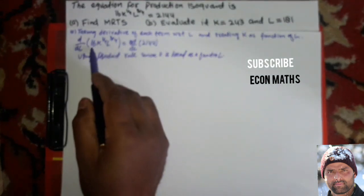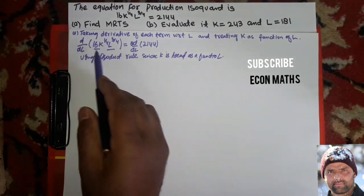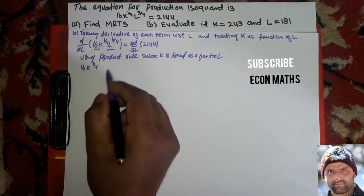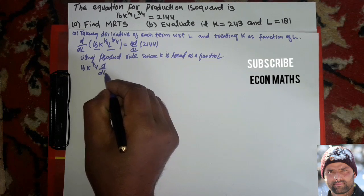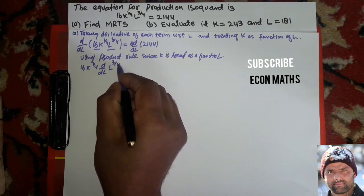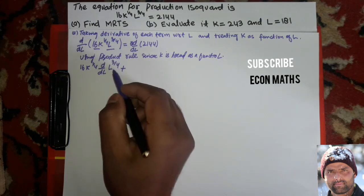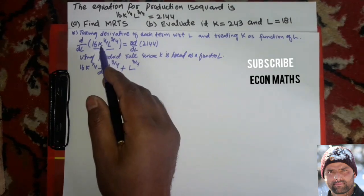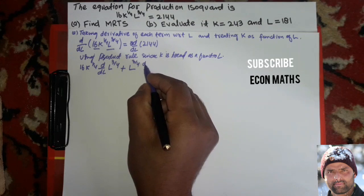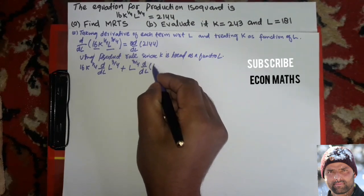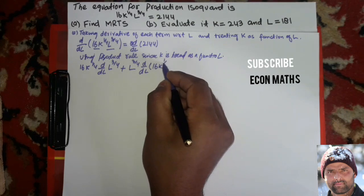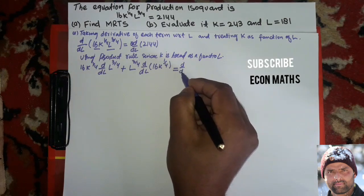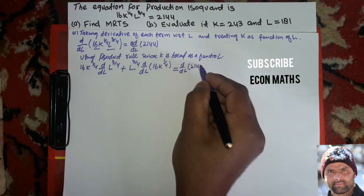This will become: using the product rule, we take the first function as it is — 16 k to the power 1/4 — and take the derivative of the second function, that is d/dL of L to the power 3/4. Plus, taking the second function L to the power 3/4 as constant and taking the derivative of the first function, that is d/dL of 16 k to the power 1/4. That is equal to d/dL of 2,144.